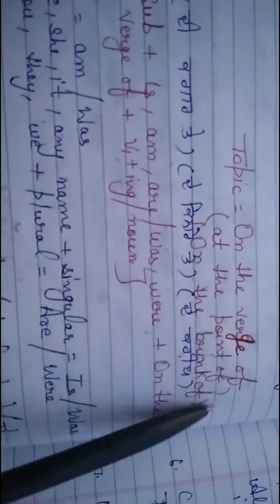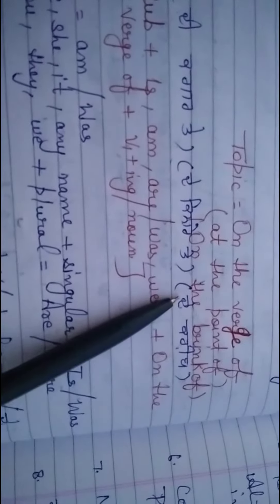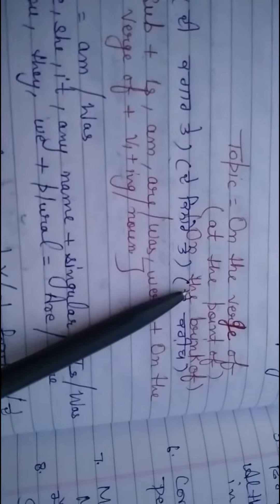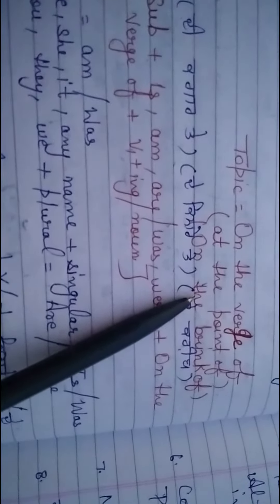Today I am going to teach you about the grammatical structures 'on the verge of,' 'at the point of,' and 'on the brink of.' These grammatical structures have the same meaning. These days, these topics can be seen in newspapers most of the time. If you want to learn the use of them, please watch this video till the end.